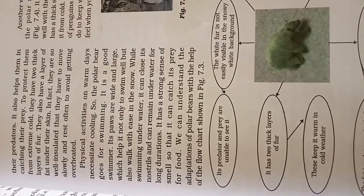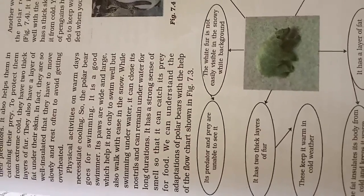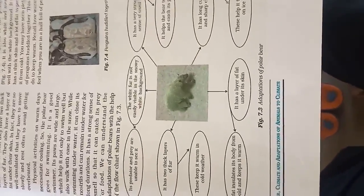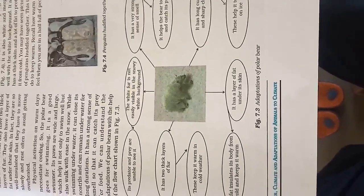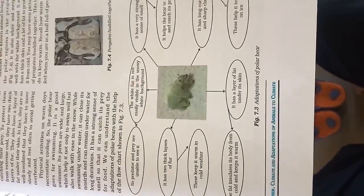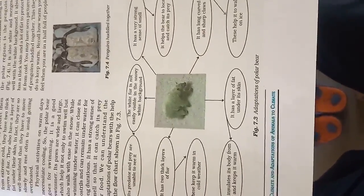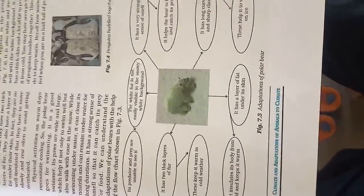The polar bear has a good sense of smell, which is why it can catch its prey for food. We can understand the adaptation of the polar bear with the help of the flowchart in figure 7.3. The first adaptation shown is the white fur — the polar bear is not easily visible in the snow white background. This is one of the adaptations of the polar bear. It also has a very strong sense of smell, which helps it to find and catch its prey easily.